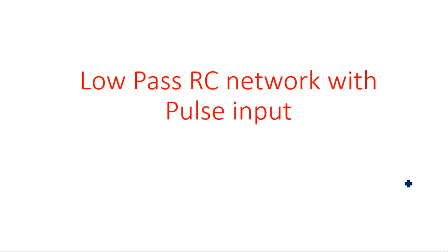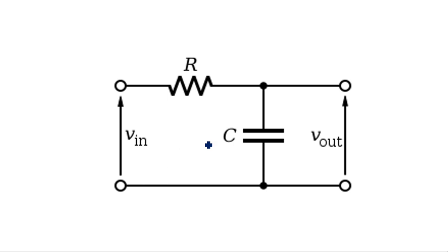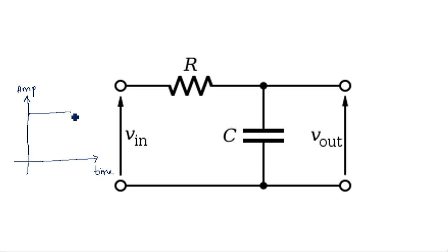In this video, you are going to learn about the low-pass RC network when it is applied with a pulse input. In previous videos, we have seen when a low-pass RC network is applied with a sinusoidal signal and later with a step input. Now, if the step is extended with a negative or delayed signal, a pulse will come. A pulse is nothing but a step followed by a negative-going signal. We are taking a signal with a time period tp, where the signal exists between 0 to tp seconds with a voltage V.